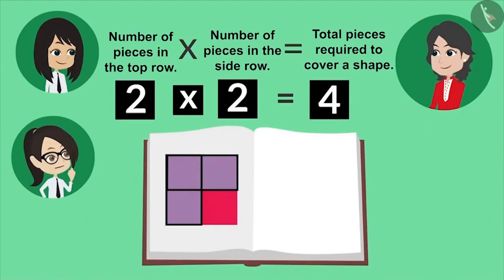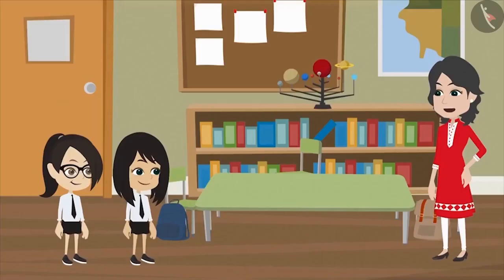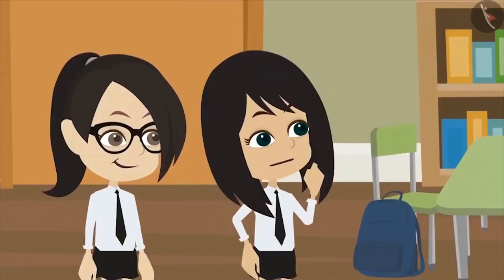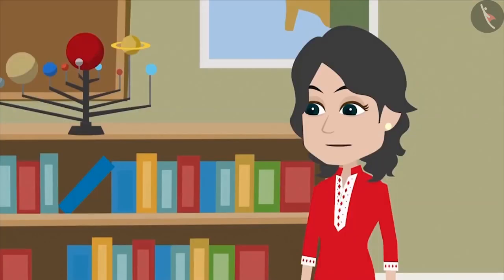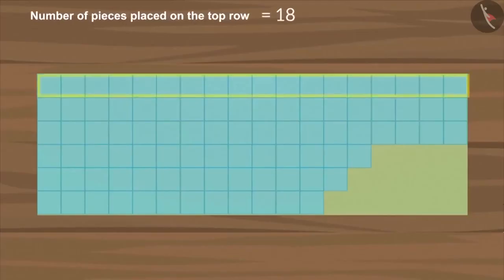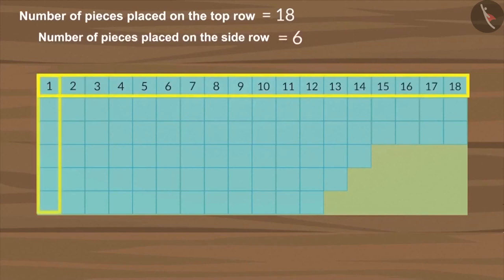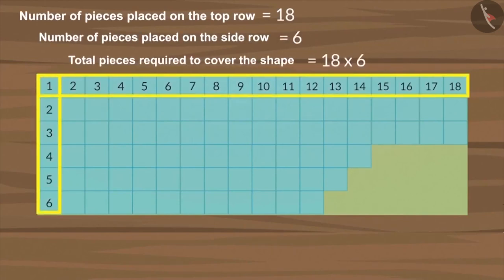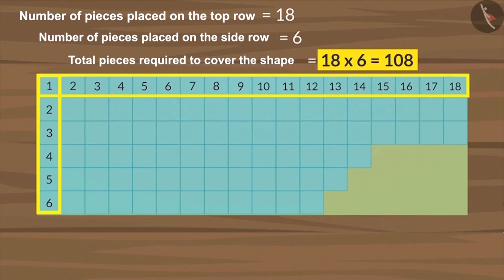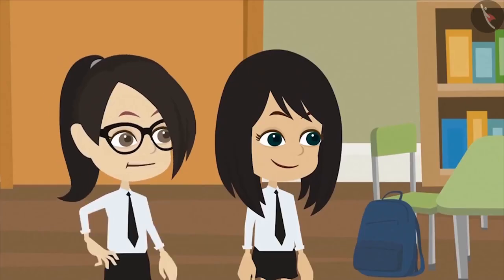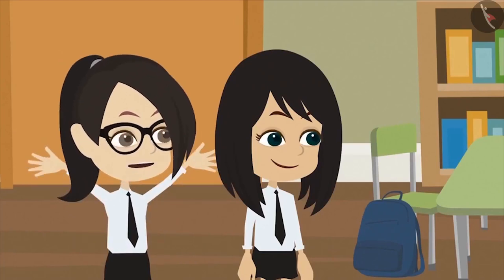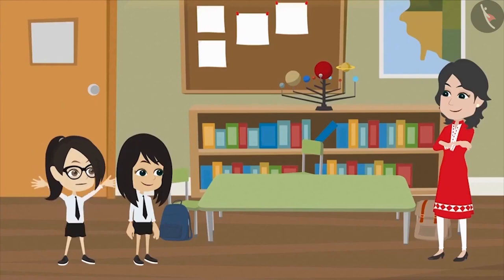But madam, in this particular shape we could just count and find out. Yes, in this shape you could count, but it is not so easy when there are very large shapes such as your desk. In such situations, this method works better. Now we will try to measure the desk. Eighteen pieces are placed on the top row of the desk and six on the side. So we multiply them to identify how many pieces will be required to cover the entire desk. We get 108 on multiplying 6 by 18. Does this mean that we will require 108 pieces to cover this desk completely? Yes.